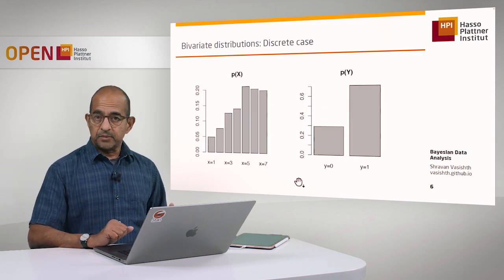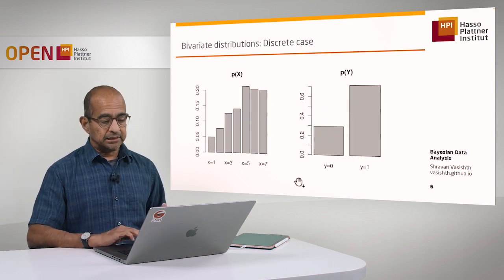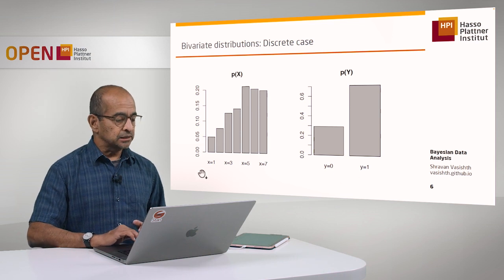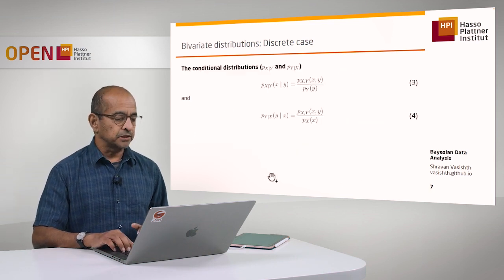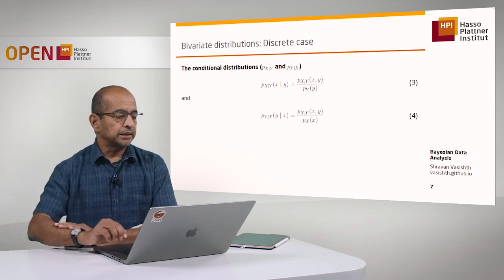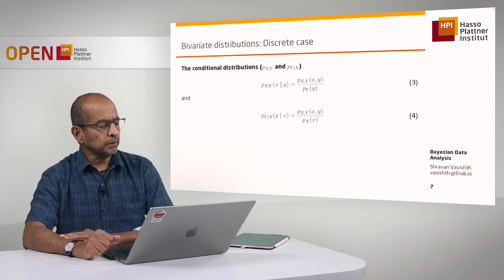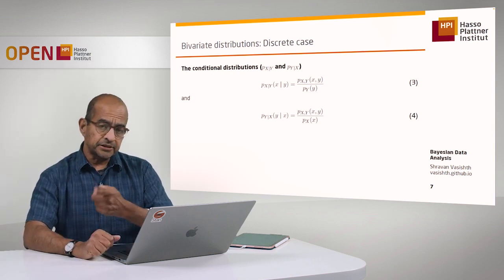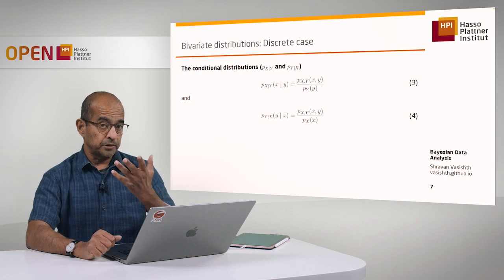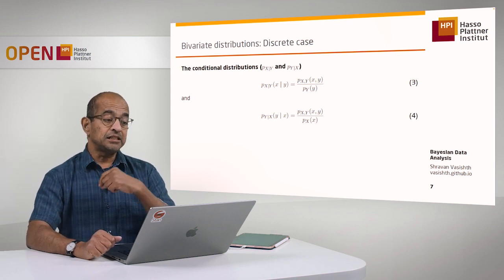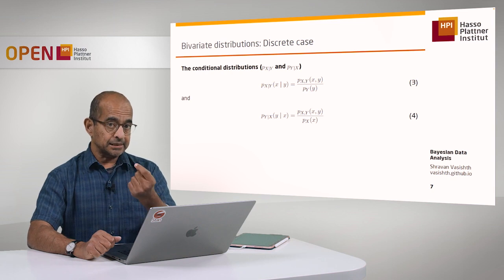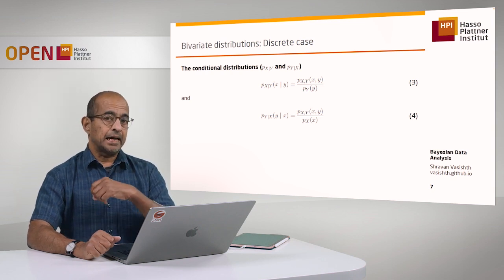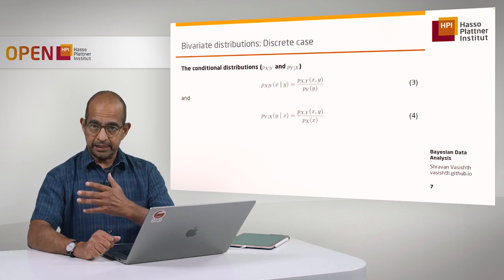You can also visualize these marginal distributions. This is your Bernoulli and this is your Likert, so everything is pretty straightforward here.